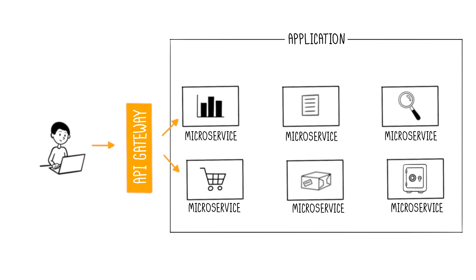For example, in an online shopping site, there might be microservices for the shopping cart, home page, history, inventory, etc., and together they form the application. Microservices can be called by clients through APIs.